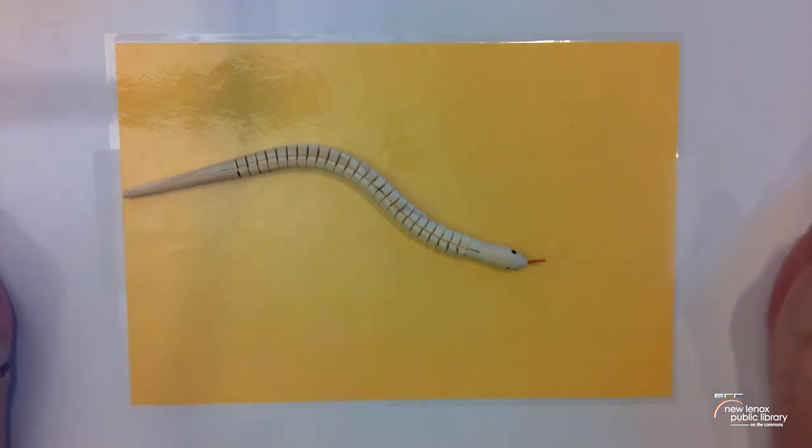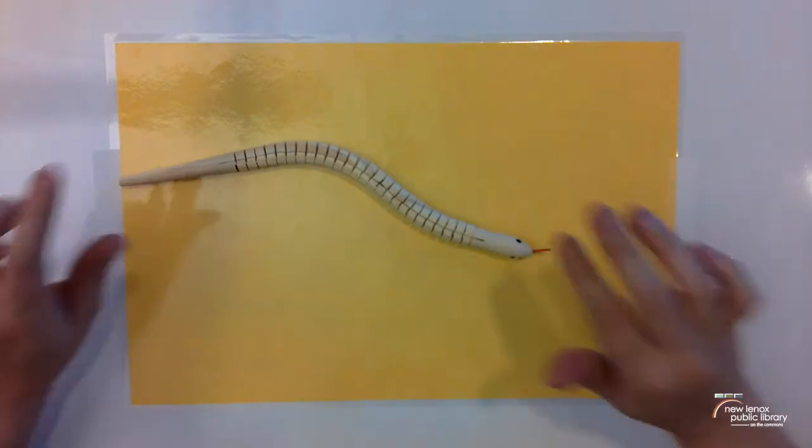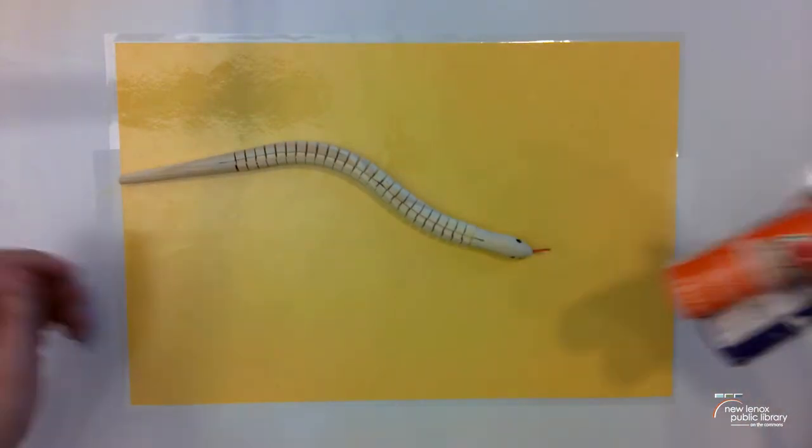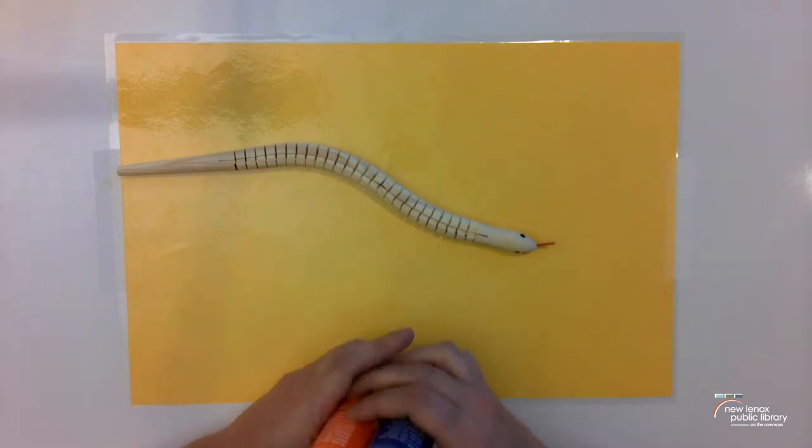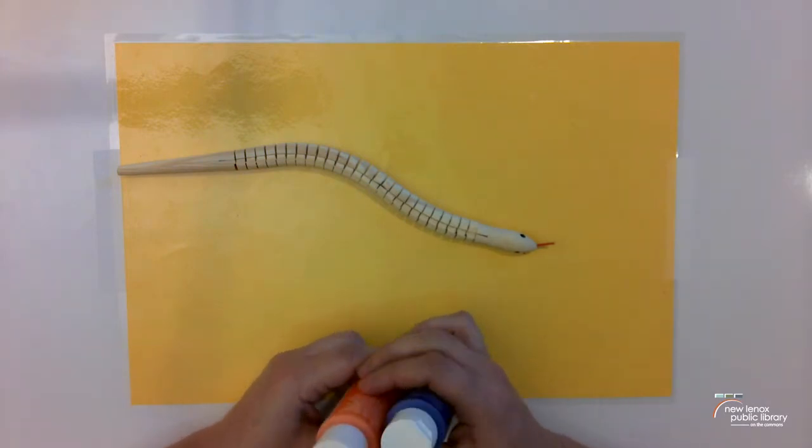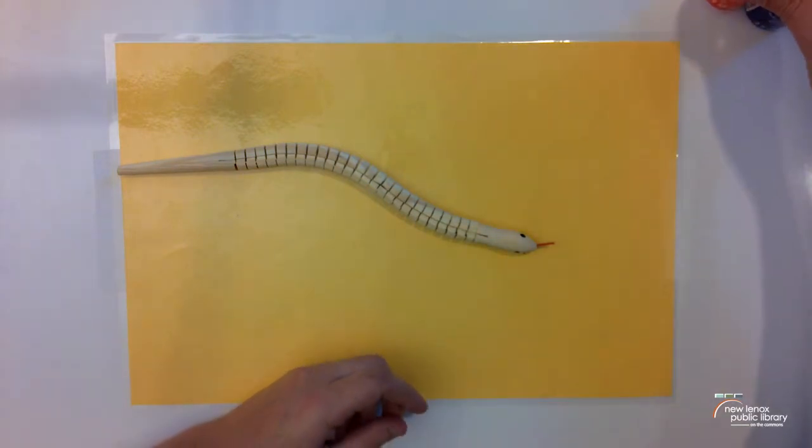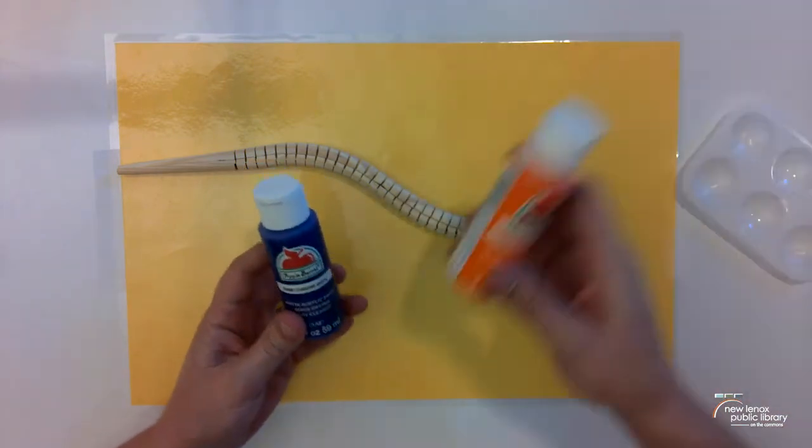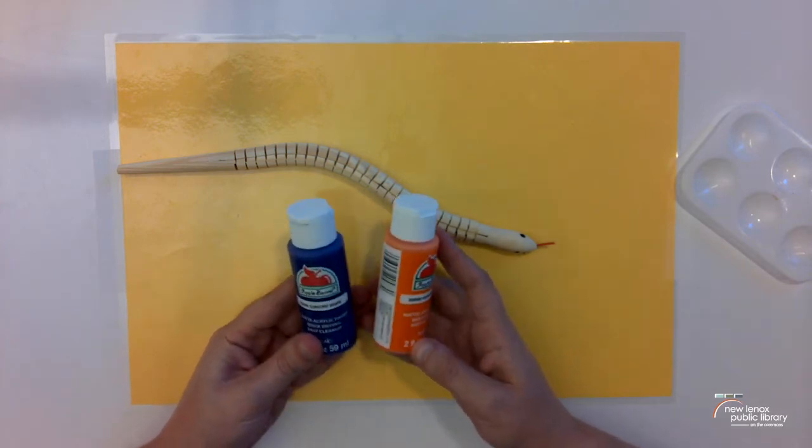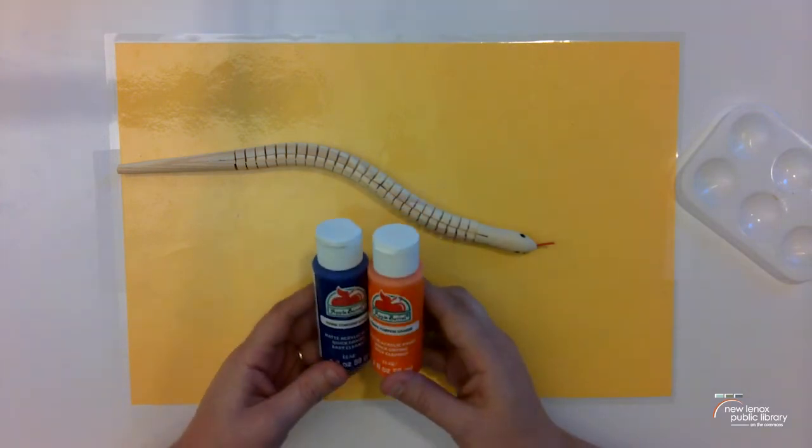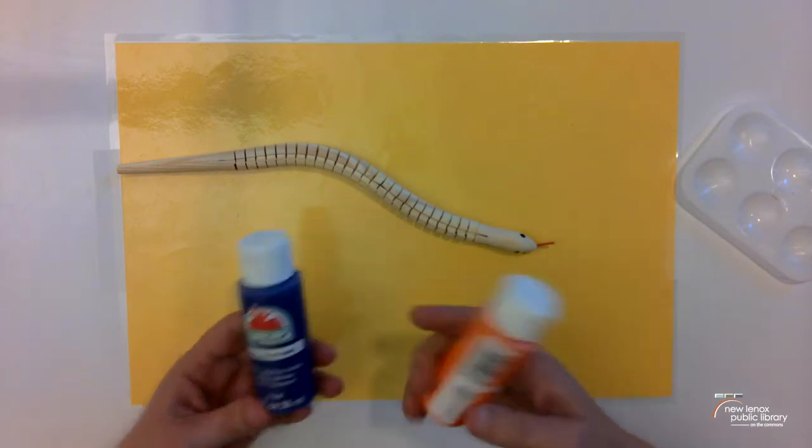So in your Art Attack kit you should have received a wooden snake as well as two different colors of acrylic paint. If you have acrylic paint at home that you would prefer to use that is just fine. But we're going to use purple and orange today. Again if you have acrylic paint at home and you want to use more than two colors you are more than welcome to. But I'm going to show you how to do it with two colors today.